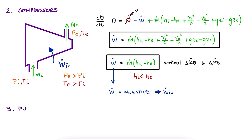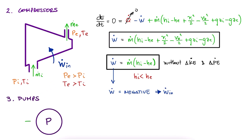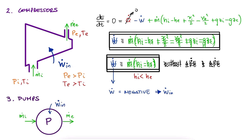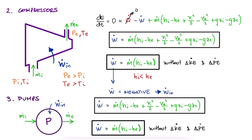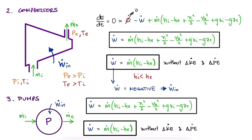For pumps, we use a circle for the device, with mass coming in, mass coming out, and work coming in. After neglecting the same terms as with the turbine or the compressor, we see that the expression is also the same.